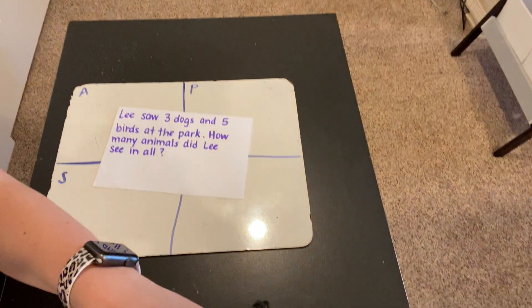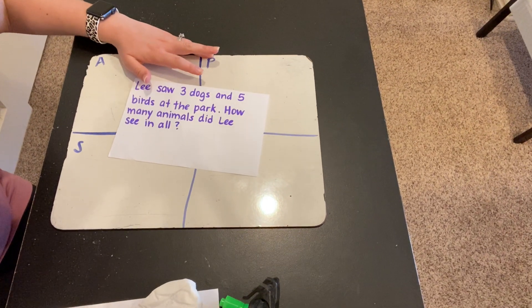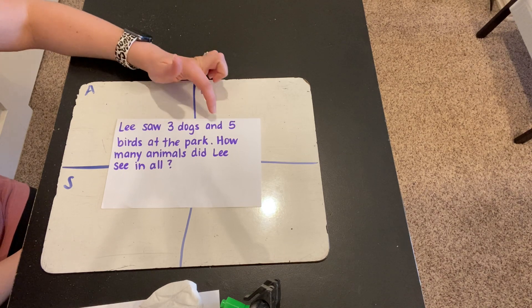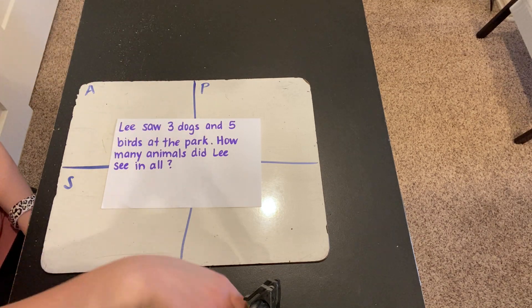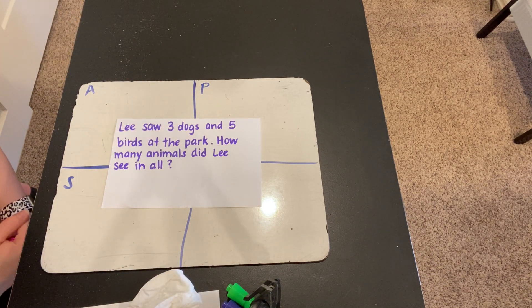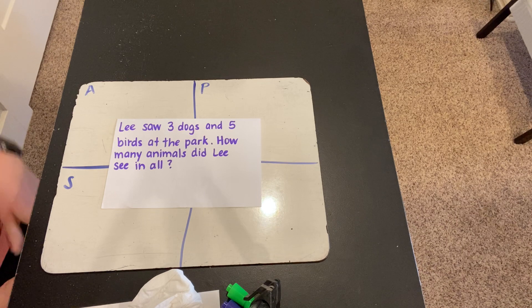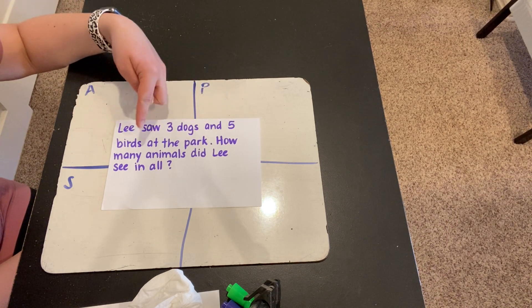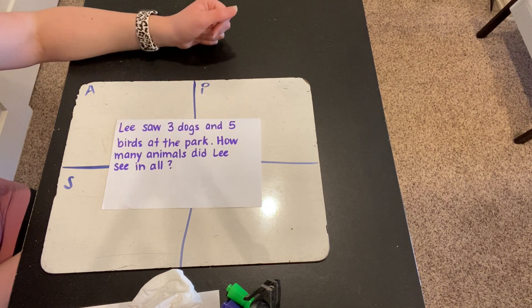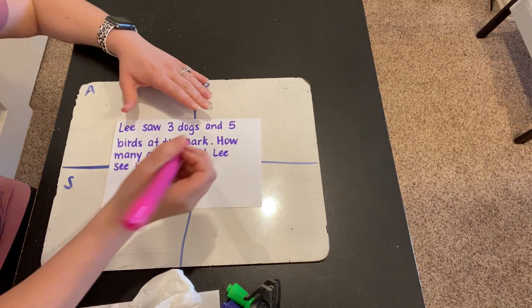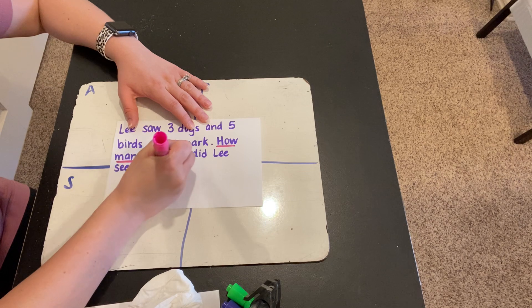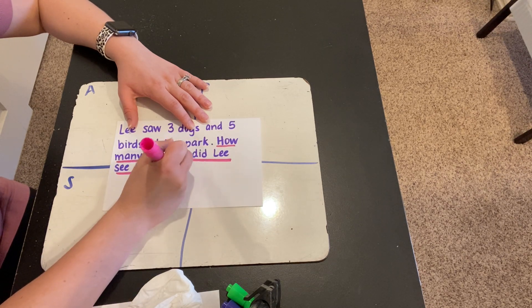Now let's move on to our word problem of the day. Here it is. Read with me. Lee saw three dogs and five birds at the park. How many animals did Lee see in all? Listen to this problem one more time. And this time I want you to listen very carefully for the question that we're being asked. Lee saw three dogs and five birds at the park. How many animals did Lee see in all? Did you hear the question? We need to solve: how many animals did Lee see in all? It ends with a question mark, so that's what we need to solve.